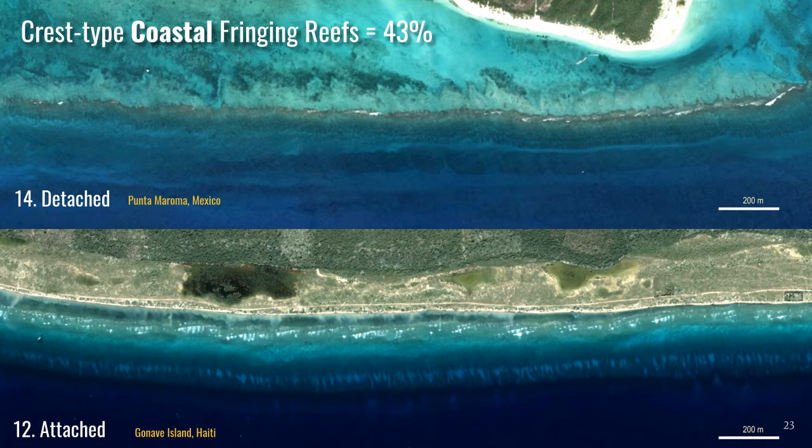Also in coastal settings we have crest type coastal fringing reefs, forming 43% of all fringing reefs — making them the most common reef type in the Caribbean. There are two categories: the first is detached from the shore with a narrow lagoon, like at Punta Maroma in Mexico, which is the most common reef type; and the second is attached to the shore with no lagoon, like at Ganavi Island in Haiti. These attached forms aren't that common and may actually be detached forms where coastal sediments have advanced into the lagoon in low wave energy settings.